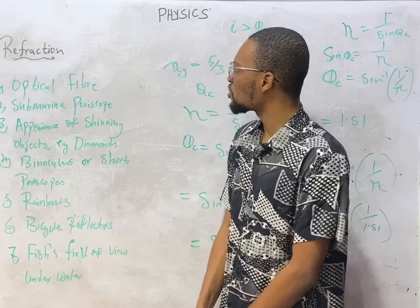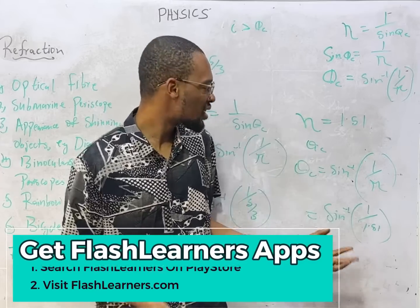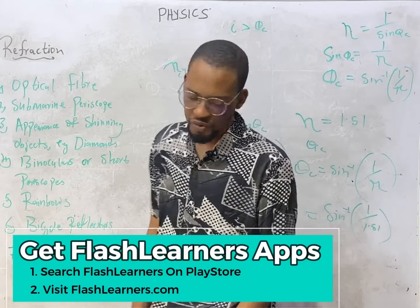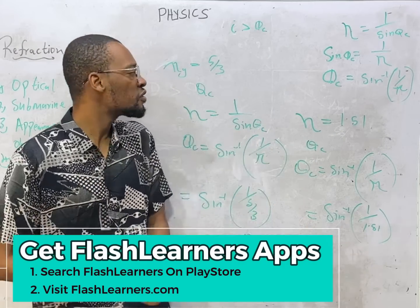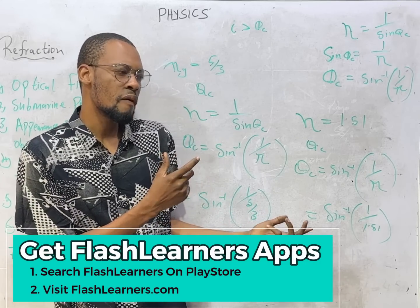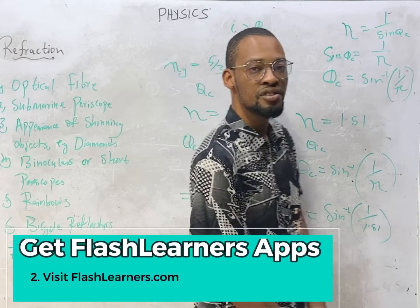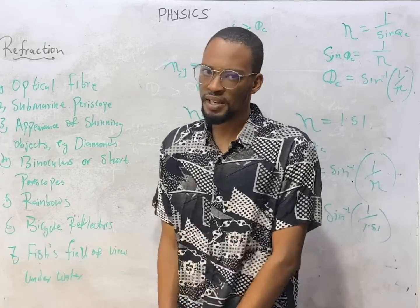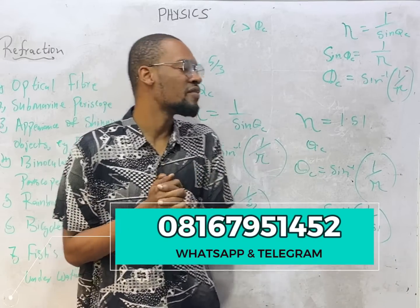So ladies and gentlemen, that is it for critical angle and total internal reflection. I do hope you've learned one or two things. If you have issues with how to find sine, cosine, and tangent without or with a calculator, follow the mathematics playlist, as the physics playlist is less deep into the basis of calculations. I've done that in the mathematics series, which is complete. Follow the mathematics series and physics together — mathematics will strengthen your calculation ability, and physics will do justice to every other thing.